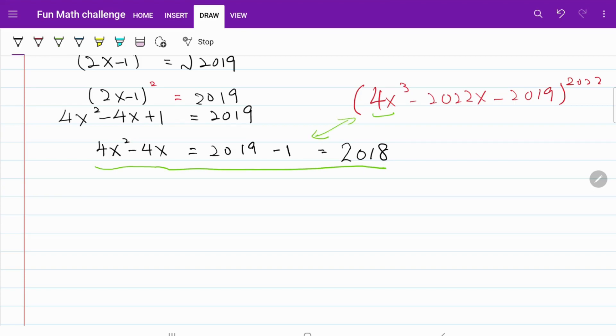So what I can do is 4x square minus 4x is equal to 2018. 4x square is equal to 2018 plus 4x. From here, I can just multiply x on both sides.